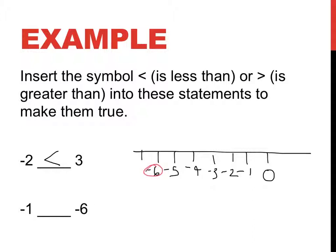Negative 6 is over here. Negative 1 is over here. Think about it like temperature. What's a greater temperature? What's a warmer temperature or a greater temperature? Negative 1 or negative 6? Ooh, definitely going to be negative 1. So negative 1 is greater than negative 6. Because the closer you are to 0 in the negatives, the greater the number.